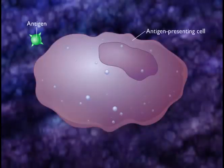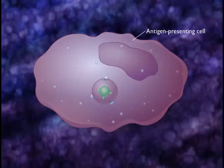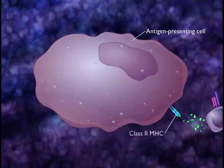Sensitization occurs when the antigen makes contact with some part of the body. The antigen is taken up, processed by antigen-presenting cells, and presented on a Class II MHC to T helper cells.